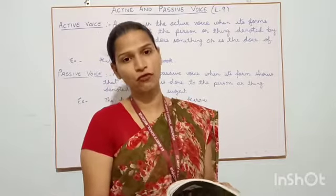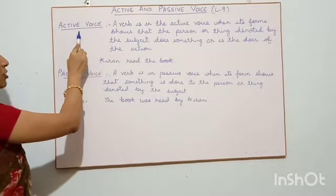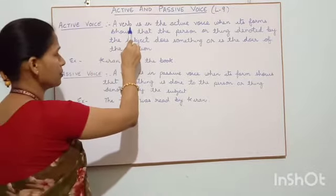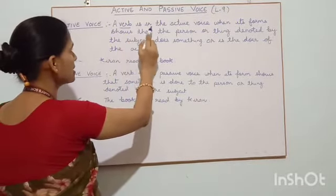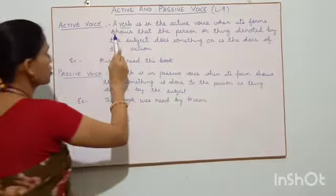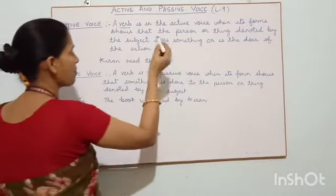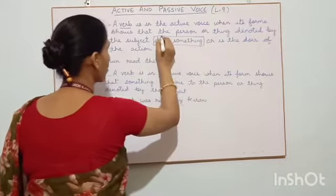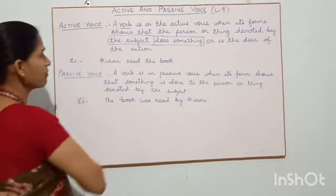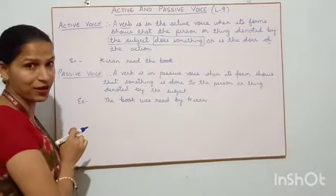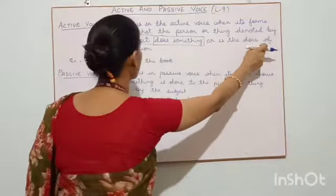First of all, I am going to read the definitions I have written on the board. Please pay attention. We will go with active voice first. When we talk about active voice, it means it is related to the verb. A verb is in the active voice when its form shows that the person or thing denoted by the subject does something. Who is doing the action here? The subject. In active voice, the subject does something — or is the doer of the action.